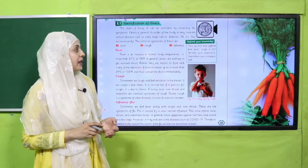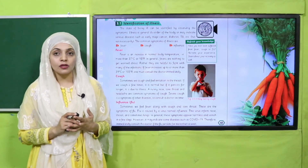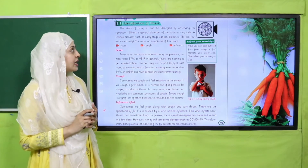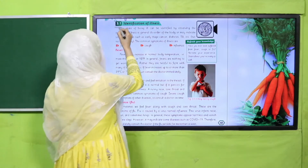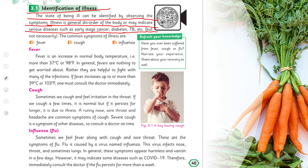Now, please open page number 40 in your science books. We will start reading: Identification of Illnesses. The state of being ill can be identified by observing the symptoms. Illness is a general disorder of the body, or may indicate serious diseases such as early stage cancer, diabetes, TB, etc. The common symptoms of illness are fever, cough, and influenza.